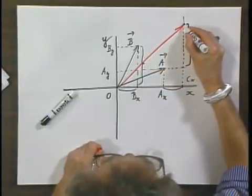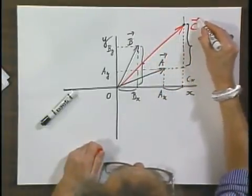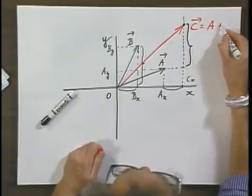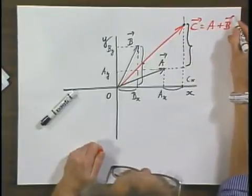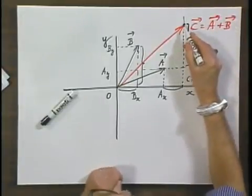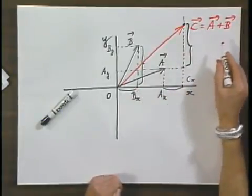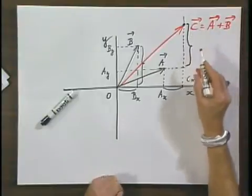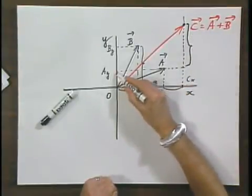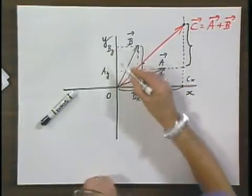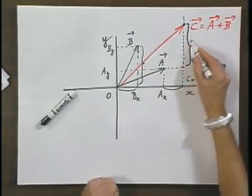And so this is now the end point of my vector C. There is C, and that is A plus B. The x component of C is A x plus B x, and the y component of C is A y plus B y.